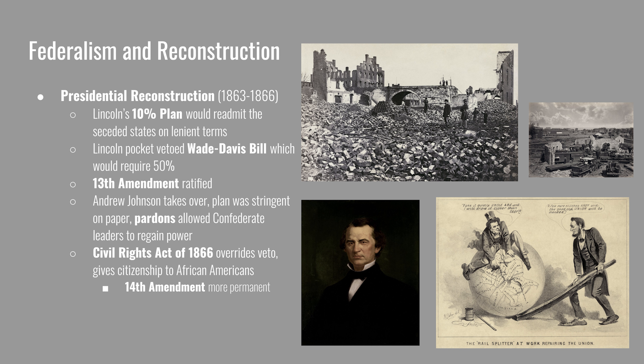Johnson vetoed the bill, but Congress overrode his veto with a two-thirds majority. The Civil Rights Act formally gave citizenship to African Americans and tried to build in protections for them. This was made more permanent with the passage of the 14th Amendment. Republicans in Congress believed that if a Democratic majority ever came to power, they could simply repeal the law and revoke citizenship from African Americans — repealing a constitutional amendment would require much more work.